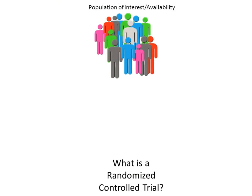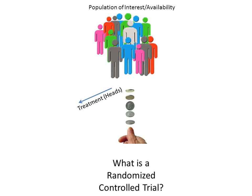So what is a randomized controlled trial? The basic ideas are pretty simple. We begin with a population of interest, or one of availability. We then pick somebody from this population and flip a coin. If the coin comes up heads, we put that person in the treatment group. If the coin comes up tails, we put the person in the control group.